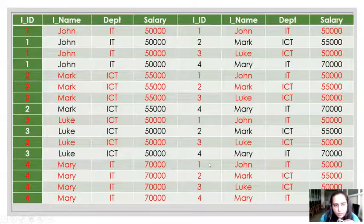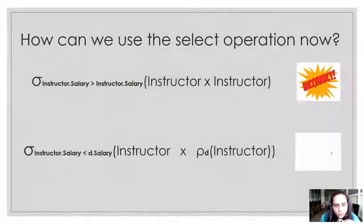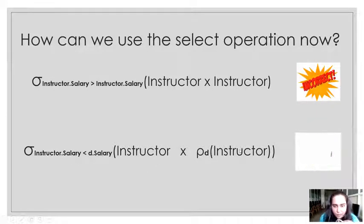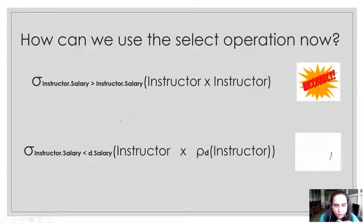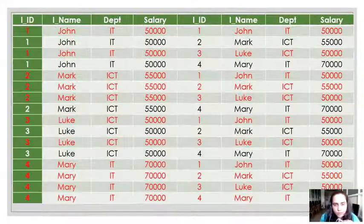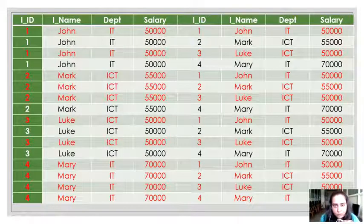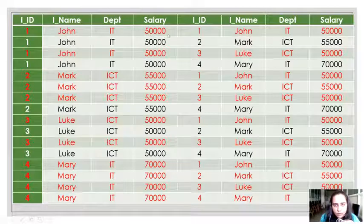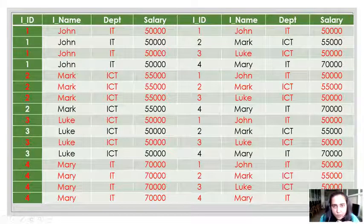What is the result of that query? The query says: from the first table, the salary should be less than the salary from the second table, which is D. So I want only those rows where salary from the left side is less than salary from the right side. I've marked red all the rows that do not satisfy this criterion. For example, the first row contains 50,000 on both sides, and 50,000 is not less than 50,000, so it will not be included.